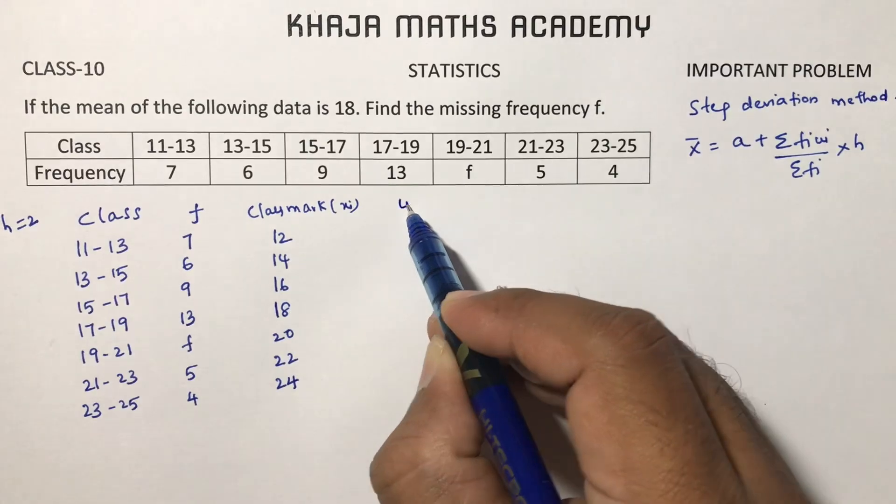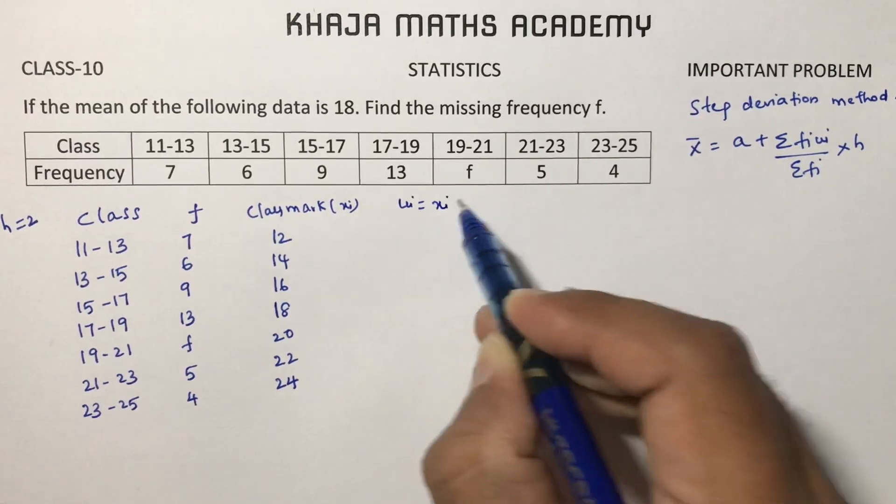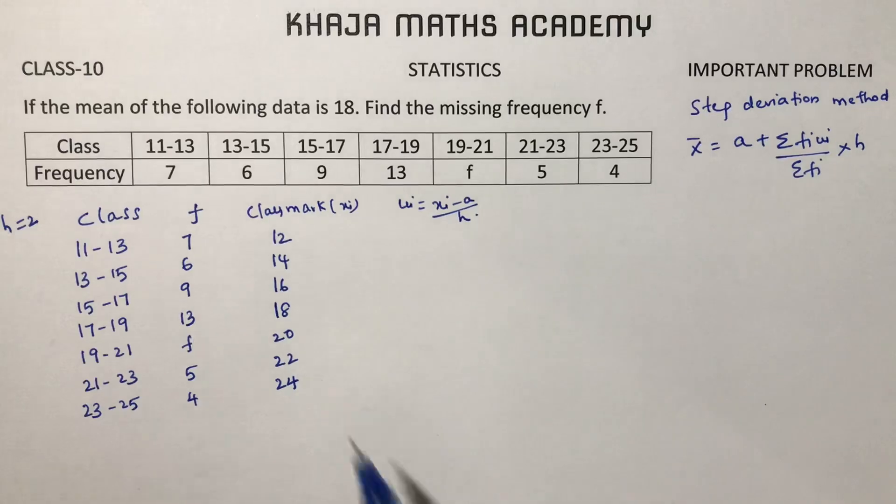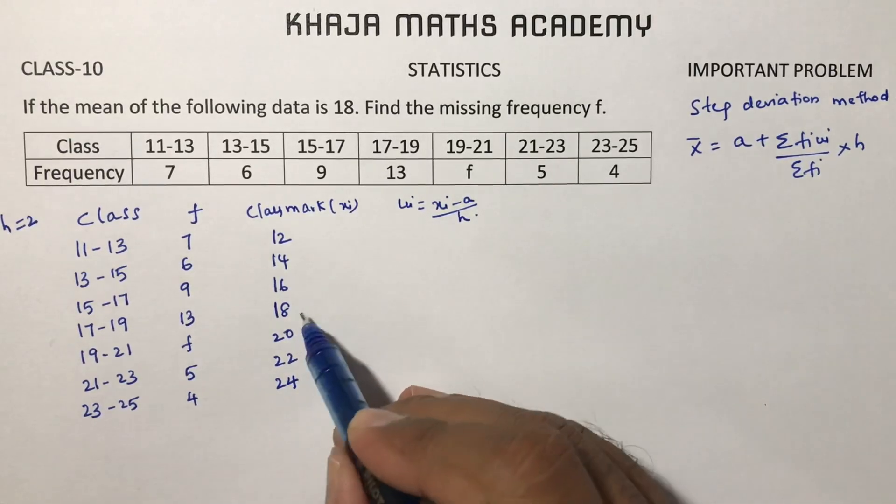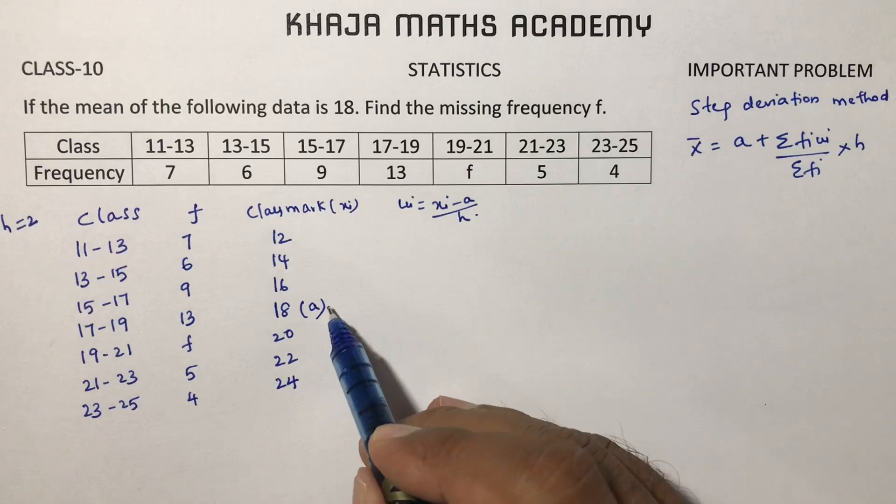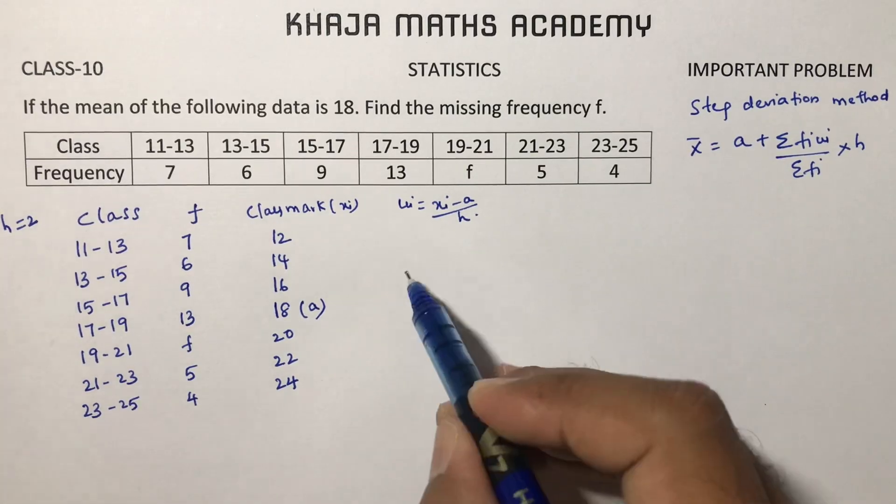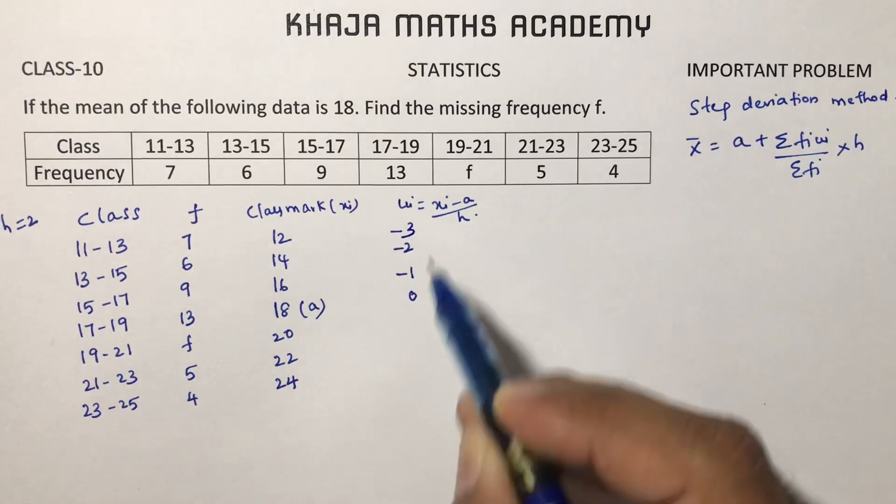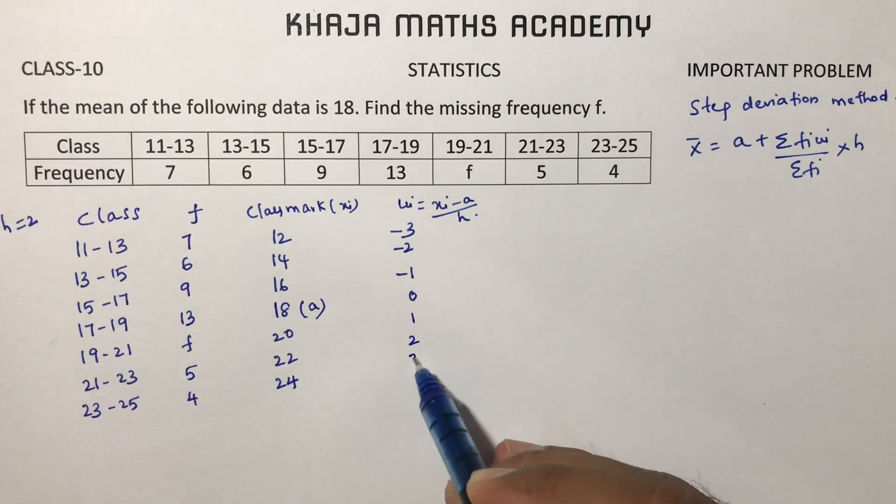I need to calculate ui. ui is nothing but xi minus a by h. In xi, any one value we can assume as a. I'll assume 18 as a. Now here, sometimes you can write directly or otherwise you can calculate: 0, minus 1, minus 2, minus 3, 1, 2, 3.